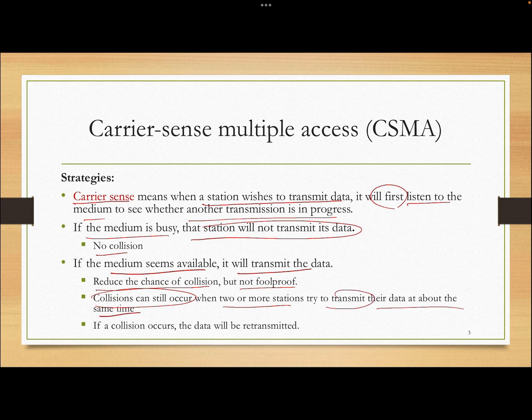Think about when you talk to your friends — you and your friend start talking almost at the same time, so you stop and say 'you go first.' You listened before speaking, but you both thought no one was speaking at that moment, so it collided. Similarly, if a collision occurs in the network, data will be retransmitted.